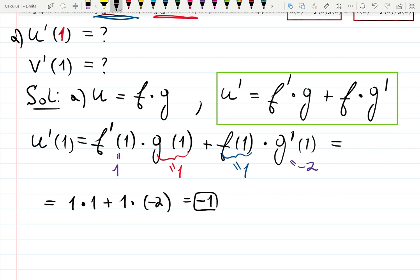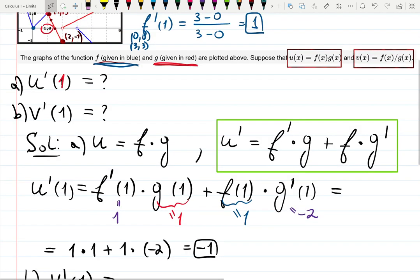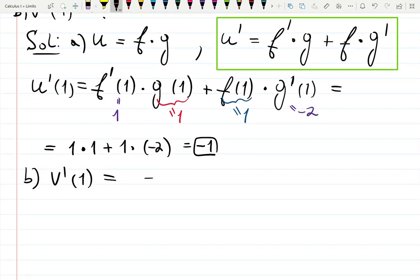B asks to find derivative of V at 1. But, V is given over here. V is F over G. So, that's quotient rule. I can even write down for you. F at 1 over G at 1. Everything prime. That's quotient rule.